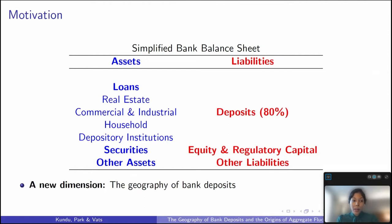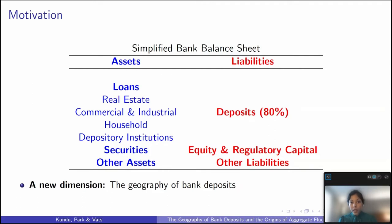The motivation for this paper comes from a simplified diagram of a bank's balance sheet. In this simplified diagram, a bank's assets consist of various types of loans, securities, and other assets. These long-term illiquid assets are financed primarily by liquid liabilities in the form of demand deposits. This liquidity transformation is critical for financing long-term illiquid assets, but it's also a key source of vulnerability for banks in the economy. In this paper, we introduce a new source of financial fragility, which is the geography of bank deposits.